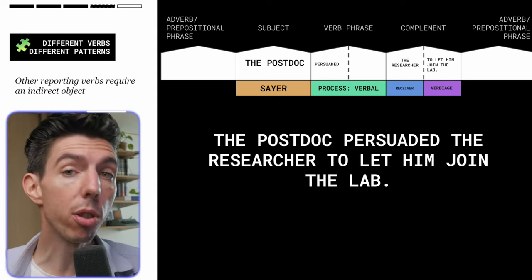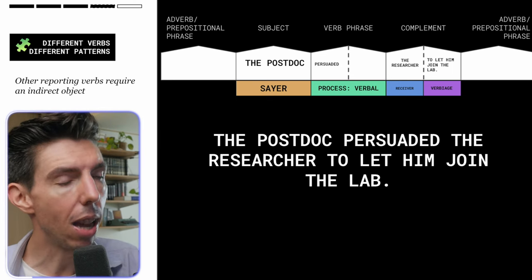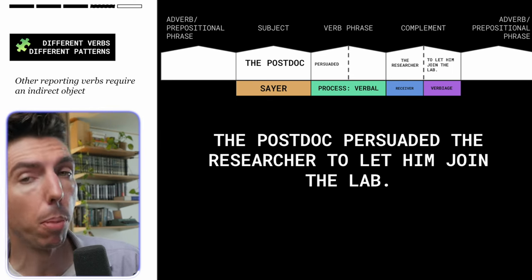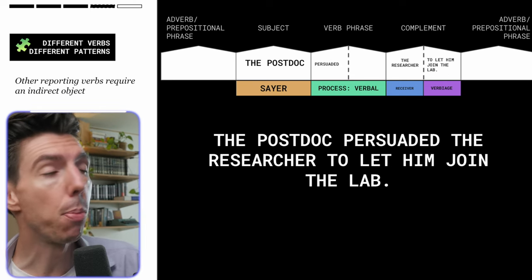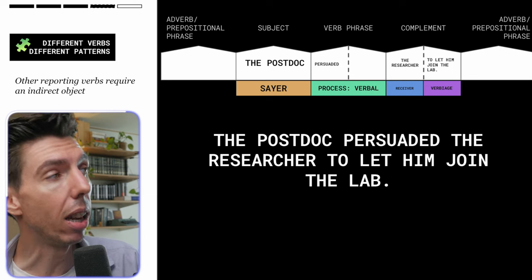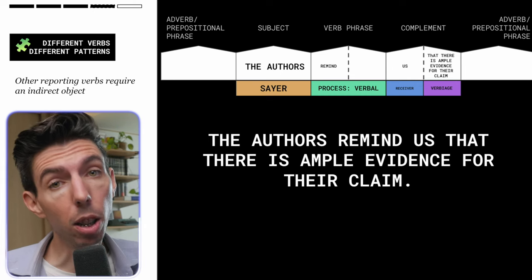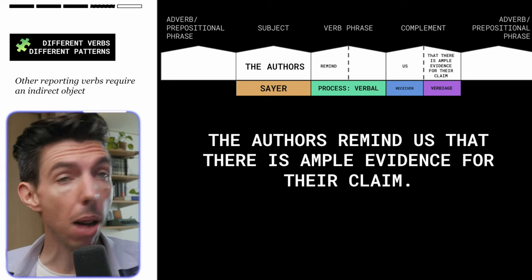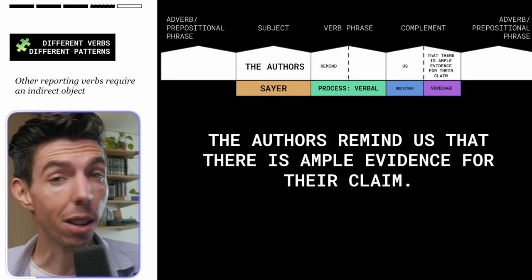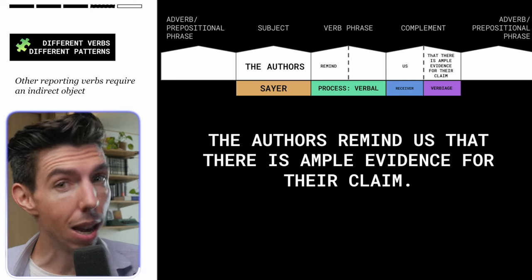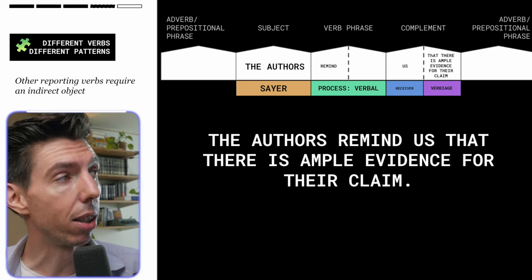Similarly, you cannot use 'persuade' without an indirect object — you need to persuade somebody of the idea. For example, 'the postdoc persuaded the researcher to let him join the lab.' The final one is 'remind,' a very common mistake — you must include an indirect object. The authors remind the reader, remind us, remind their friend — whoever — but there must be an indirect object: 'The authors remind us that there is ample evidence for their claim.'